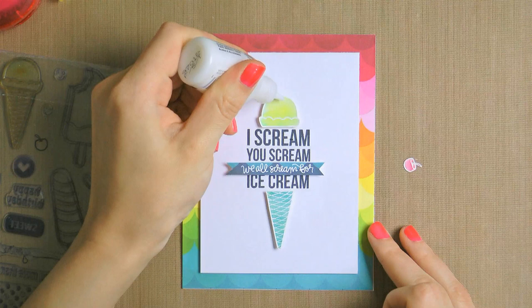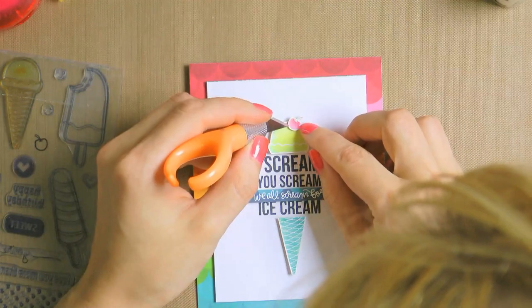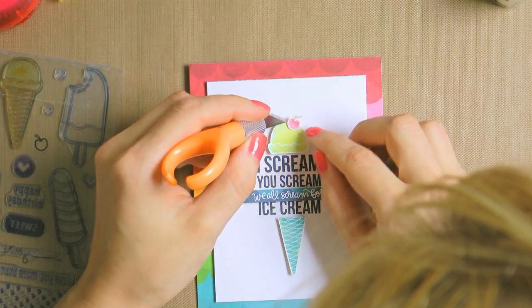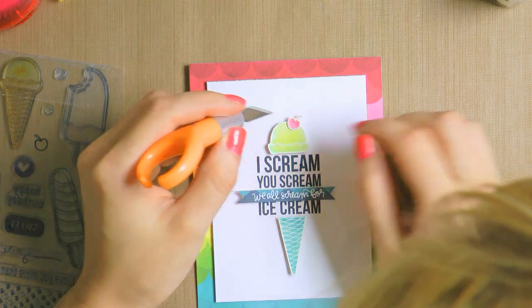Finally, I heat embossed and colored a cherry to place on top of my ice cream. I cut it out, adhered it to the top of the ice cream and added some glossy accents.